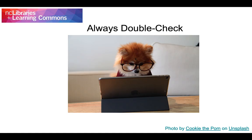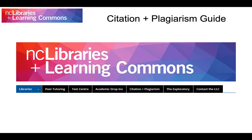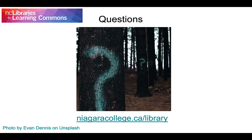All of these tools are great, but they aren't perfect. You should always proofread any citations that are created by software. And don't forget that you need to include in-text citations in your work, not just a reference page at the end. You can find helpful examples and links in the Library Citation and Plagiarism Guide. If you have any questions or would like to learn more about citation generators, contact your campus library. Visit our website at niagaracollege.ca/library for full contact information.